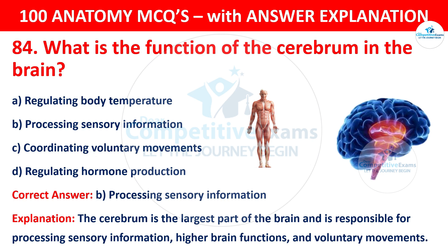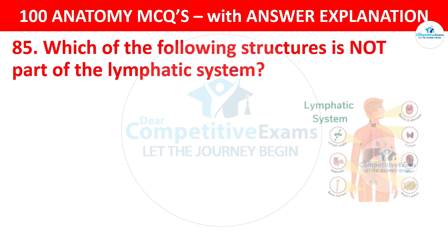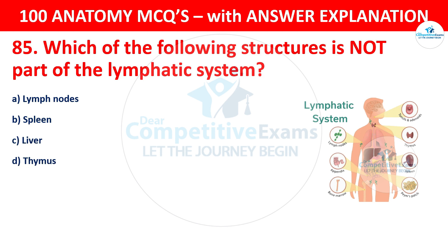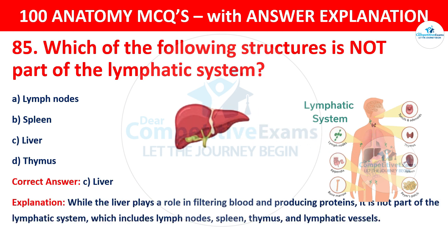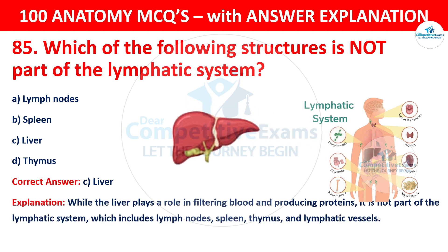Question number 85: Which of the following structures is not part of the lymphatic system? The options are: Lymph nodes, Spleen, Liver, or Thymus. The correct answer is C — liver. While the liver plays a role in filtering blood and producing proteins, it is not part of the lymphatic system, which includes lymph nodes, spleen, thymus, and lymphatic vessels.